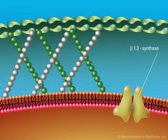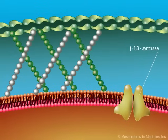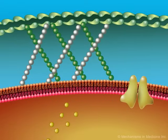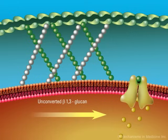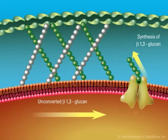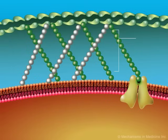The glucansynthase complex located in the fungal cell membrane is responsible for the synthesis of beta-1,3 glucan. Glucan synthesis occurs on the cytoplasmic side of the fungal membrane. As glucan chains are synthesized, they extrude toward the periplasmic space where they are then incorporated into the cell wall.